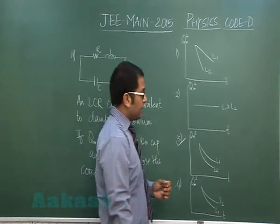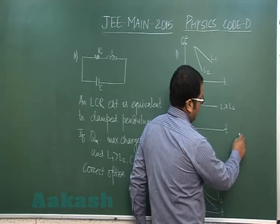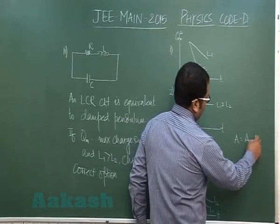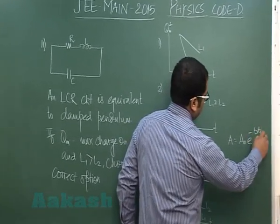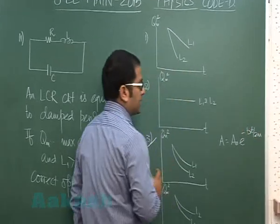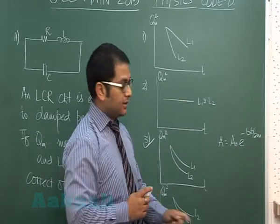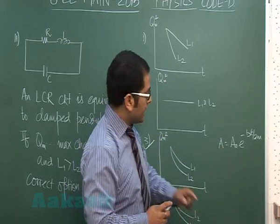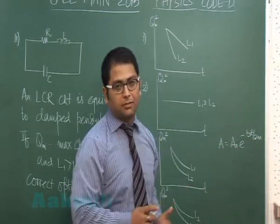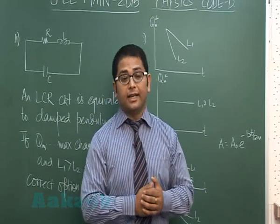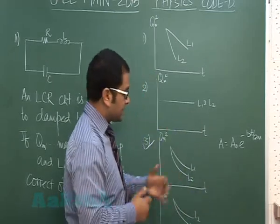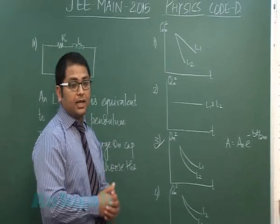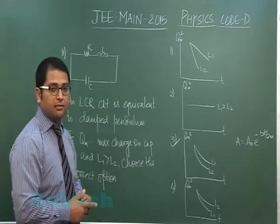But if we want to go mathematically, you know that the amplitude A = A₀e^(-bt/2m) where b comes out to be the damping factor. This is the expression of decreasing amplitude in case of simple pendulum, and here b of course would be replaced by the inductance. You can come up with the same conclusion. Now let's go to question number 12.